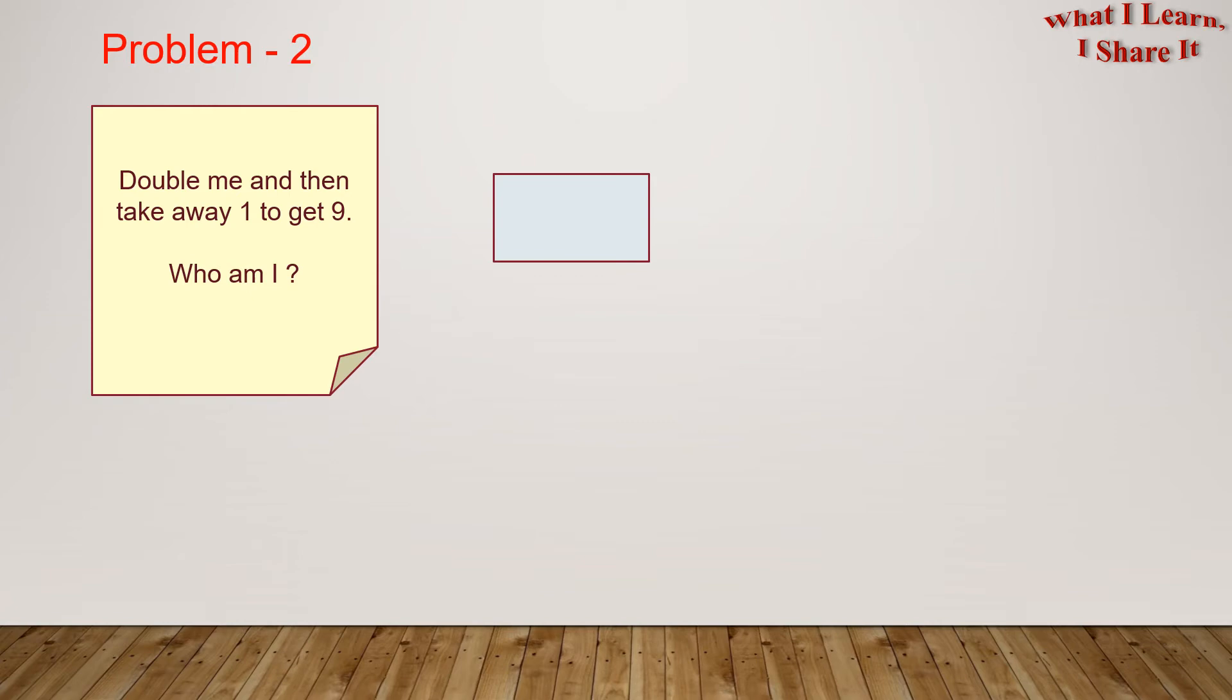Problem 2. Double me and then take away 1 to get 9. Who am I? We have to find a number which when doubled and then when we take away 1 from it, becomes 9. Let this box represent the number we are trying to find. Then we double it. And subtract 1. The remaining of this box and the previous box makes 9.